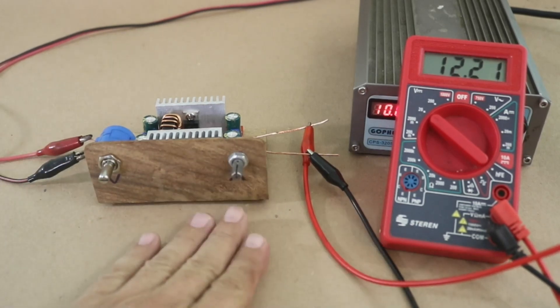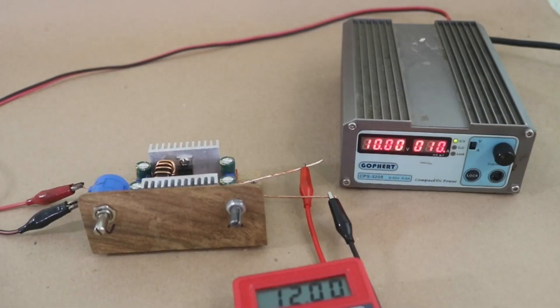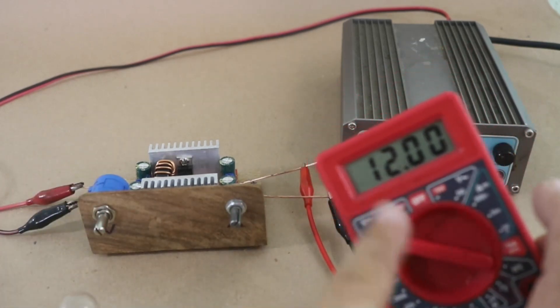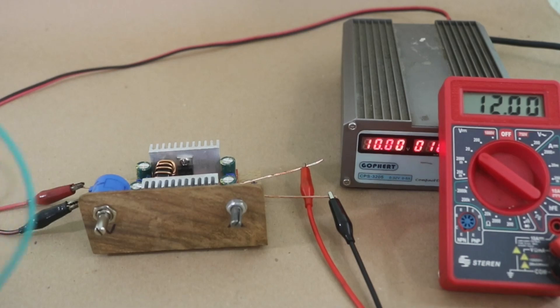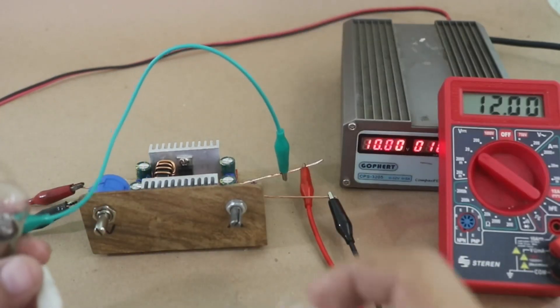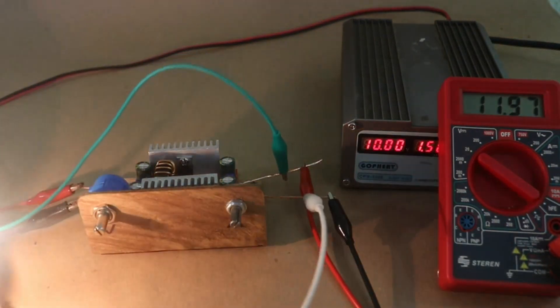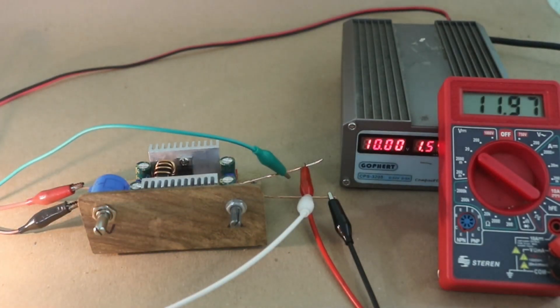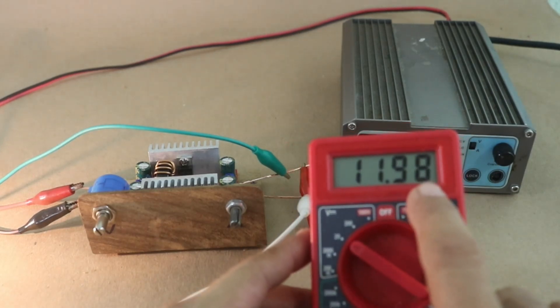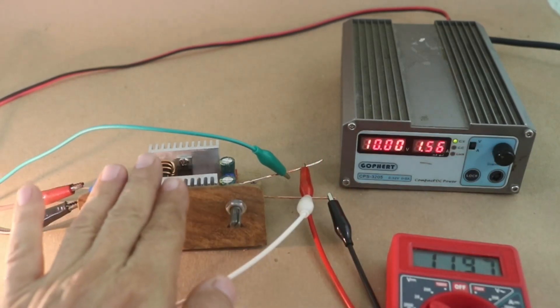Now, let me connect a load in order to test the current control. I will use this incandescent lamp. We have now, 12 volts at the output of the module. And, let me connect here, the lamp. Let me put it off camera, in order not to be blinded by the light. You can see that the output only lost a couple cents of a volt. So, the output is stable.